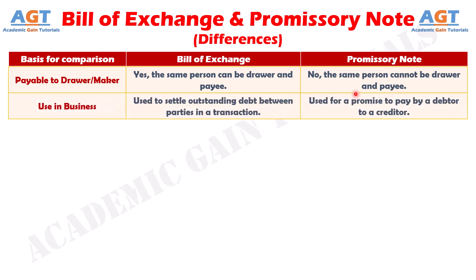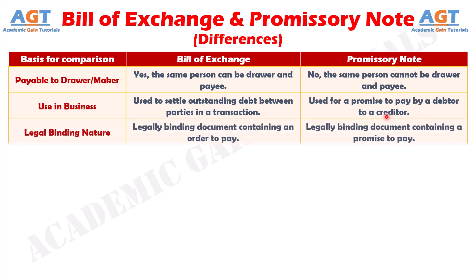Number ten: A Bill of Exchange is used in business to settle outstanding debts between parties, whereas a Promissory Note is used for a promise to pay by a debtor to a creditor.